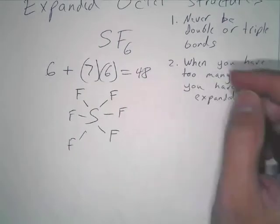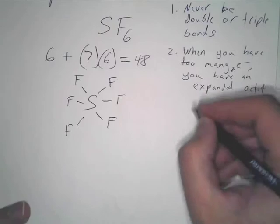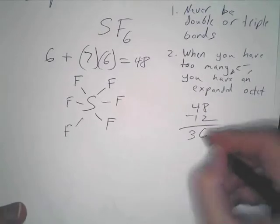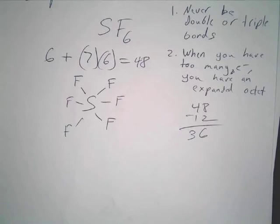Now, how many electrons did I just put in? 48 minus 12 gives us 36. That's the point though. It's expanded.